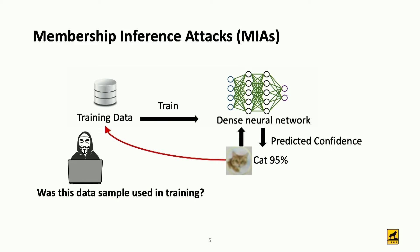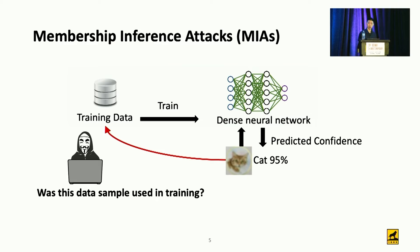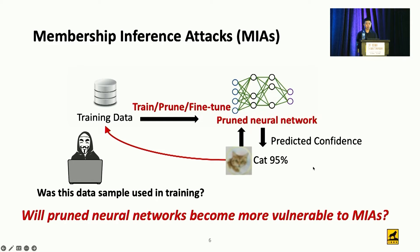In this work, we focus on a very essential privacy attack called the membership inference attack. In the membership inference attack, the attacker wants to determine whether a given data sample was used in training. The attacker queries the data sample to the neural network and gets the predicted confidence. We ask the following question: after the process of training, pruning, and fine-tuning, will the pruned neural network become more vulnerable to membership inference attack?